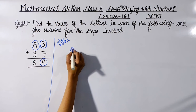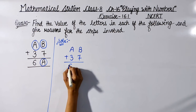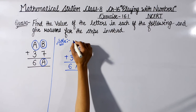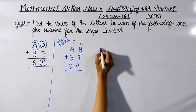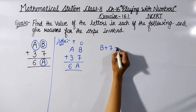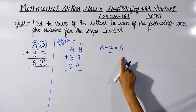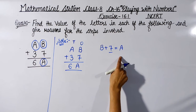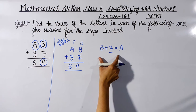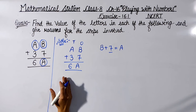The question is AB + 37 = 6A. Starting from the ones column: B + 7 = A. Here both A and B are unknown values. We cannot find both unknown values simultaneously. So the ones column alone cannot be solved — we need to move to the tens column.